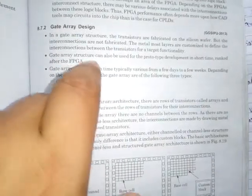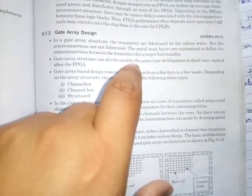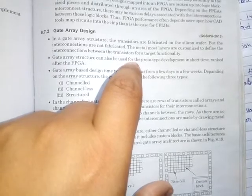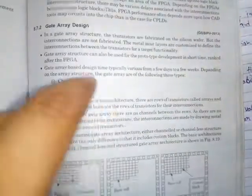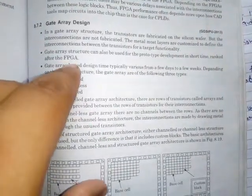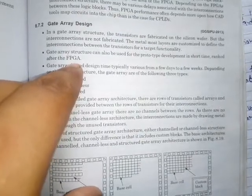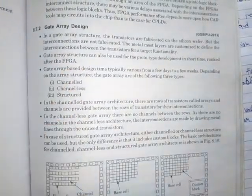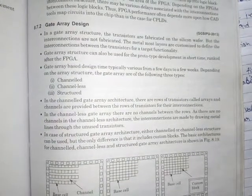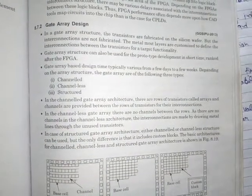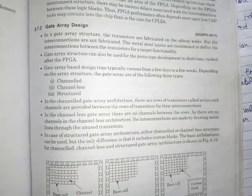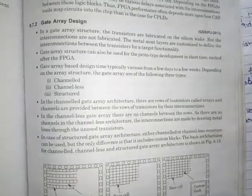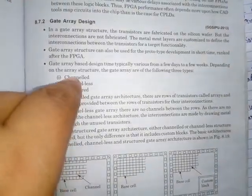In fast prototyping, the gate array design falls after the FPGA. It is slower than FPGA in fast prototyping. So the time that the prototype will take in this gate array will be lower than that it would take in FPGA style. There are three types of gate array design styles.